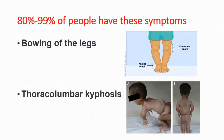80–99% of people with achondroplasia have these symptoms: bowing of the legs and thoracolumbar kyphosis. Kyphosis is an exaggerated forward rounding of the back.